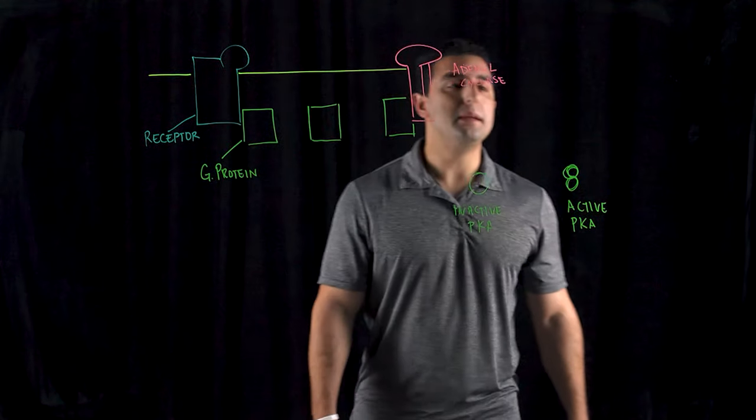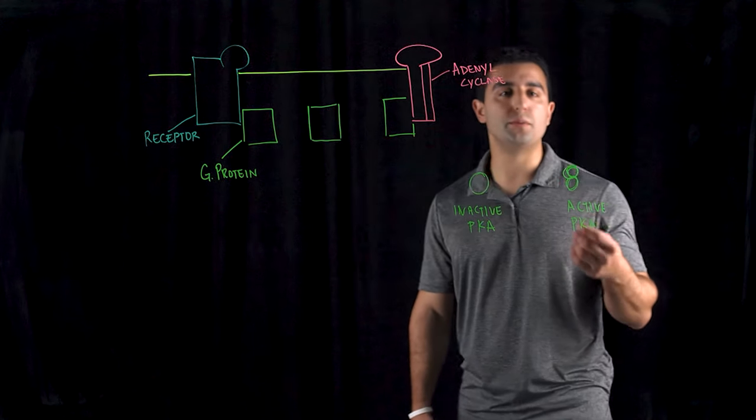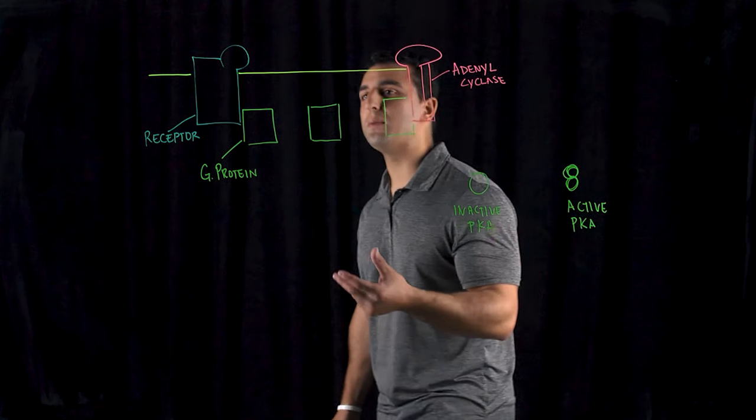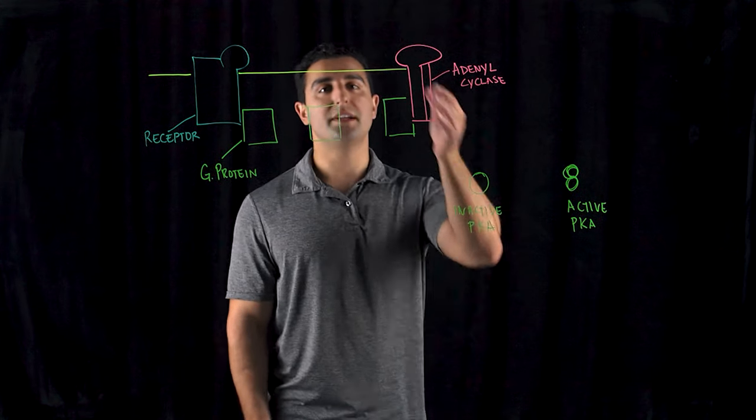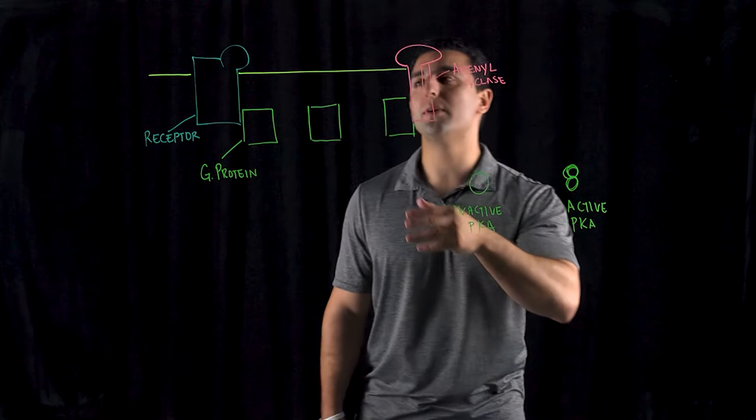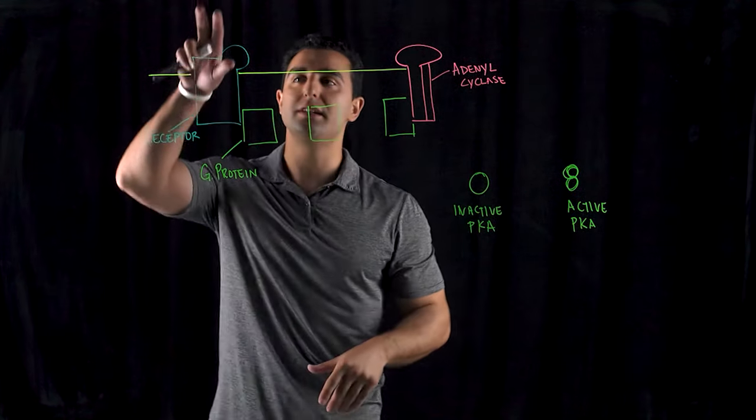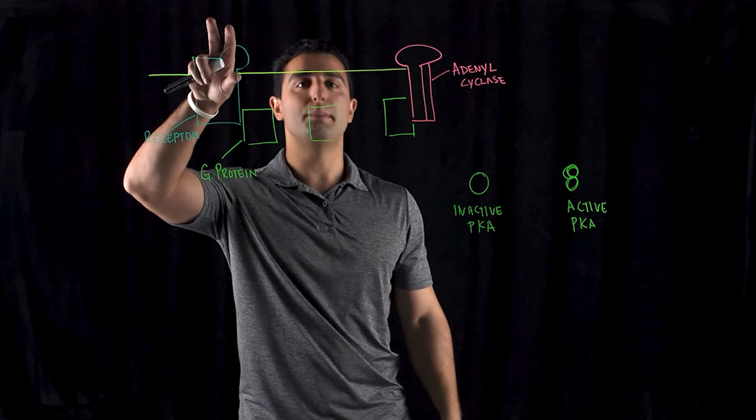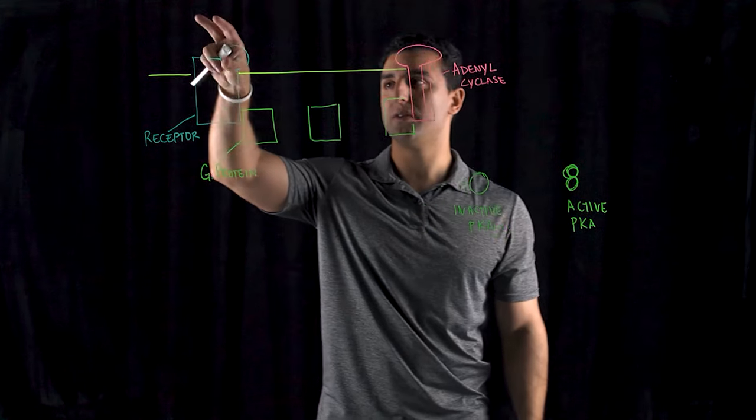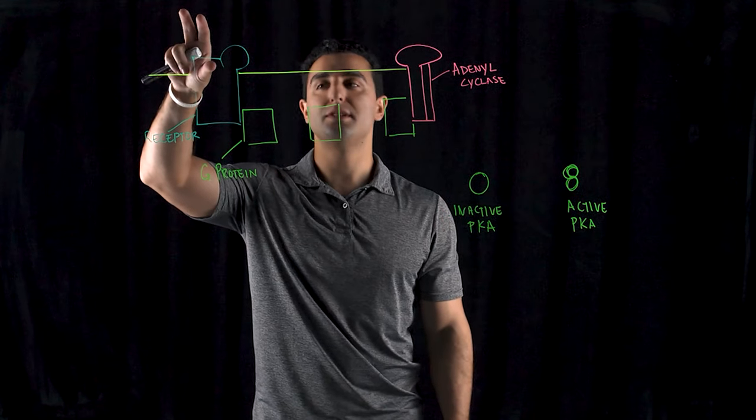Now we're going to look at cyclic AMP mechanism. This is a secondary messenger. If you remember with the hormones, certain water-soluble molecules cannot bypass the cell membrane, so the majority of the receptors are presented on the cell surface. That cell surface receptor is where the primary messenger is presented, the first messenger that's presented.